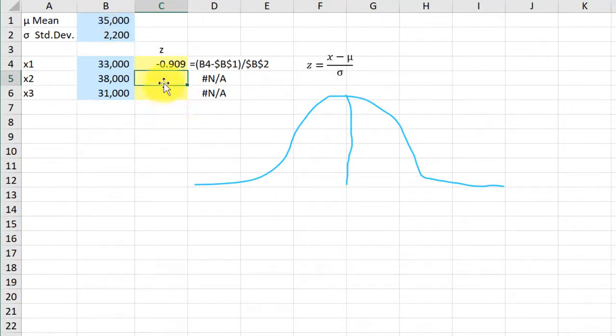And that gives us a Z-score of minus 0.91. Now, because I locked that down, the mean and the standard deviation, I can just drag this down on the other two x-values to get the Z-values that we need.